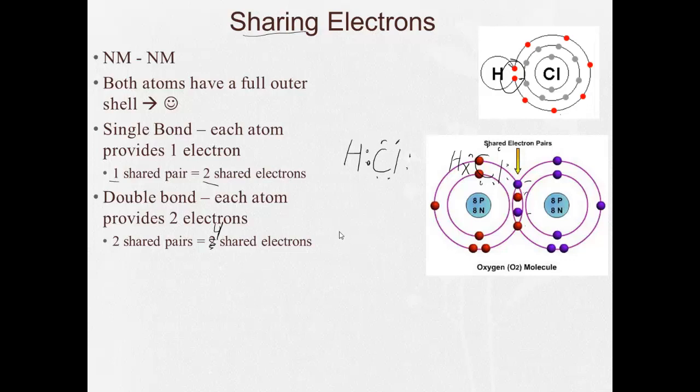And this would be drawn like this. There's oxygen with two shared pairs between them, giving each oxygen eight valence electrons total.